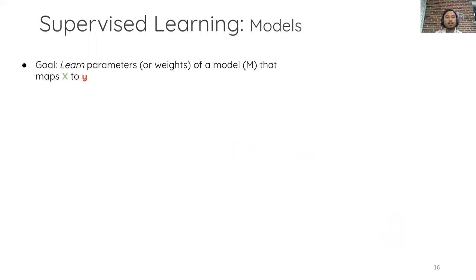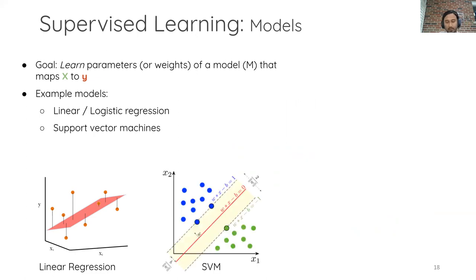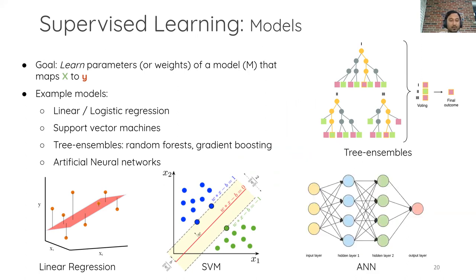In supervised learning, the goal is to learn parameters — also known as weights or coefficients — of a model that maps x to y. There are different families of models commonly used: linear regression or logistic regression for classification, support vector machines which were popular a decade ago, tree ensembles which work really well for heterogeneous data, and artificial neural networks or deep learning models that have become extremely popular for computer vision and natural language processing tasks.